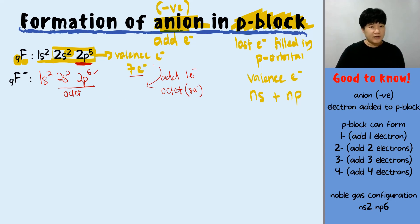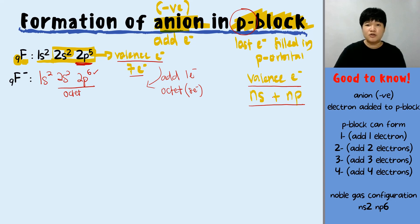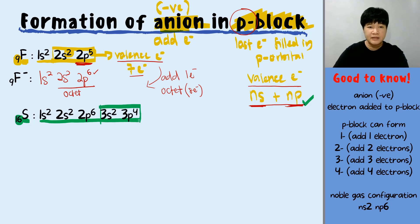The charge of the ion depends on how many valence electrons you have, so it's very important to identify the valence electron. For P-block elements, the valence electron is the total electrons in ns and np. The next example is sulfur, with 16 protons and 16 electrons. The valence electron is 3s2 and 3p4, giving 6 valence electrons.